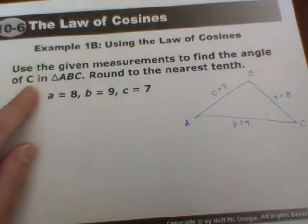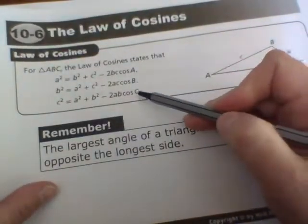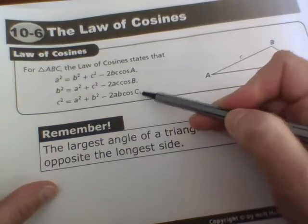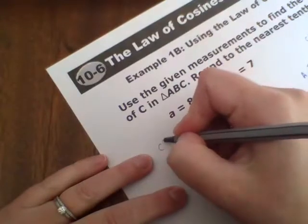This side B is 9, and this side C is 7. So remember that they are trying to get us to find C,